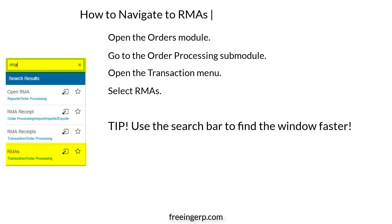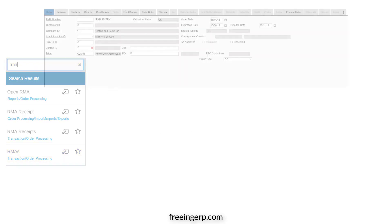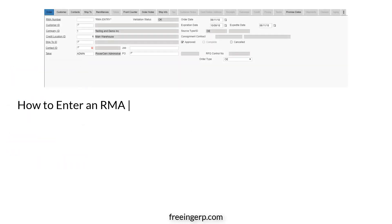You can also go to the search bar and search for RMAs to find the window faster. Once the RMAs window loads, you'll see the Order tab.